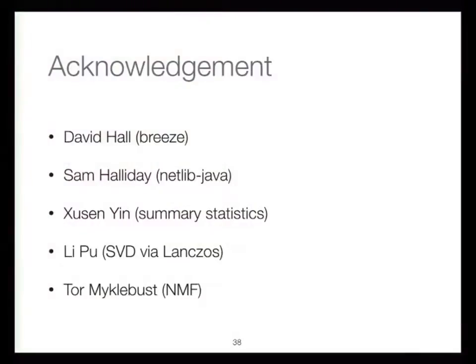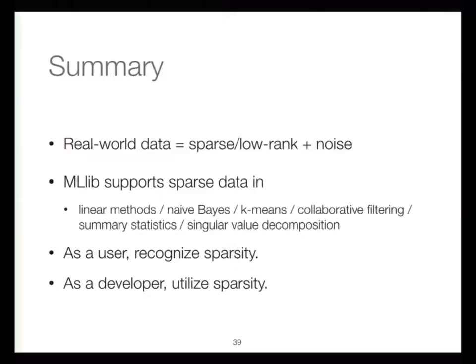For the implementation of sparse data support, I want to thank David Hall, the author of Breeze, Sam who cleared the license issue with NetLib Java, and the rest of the contributors who implemented all these functions. To summarize: try to view your data as either sparse or low-rank plus noise. MLlib supports sparse data in almost all its implemented algorithms. If you want to contribute algorithms, think about complexity relative to nnz. And if you're a user, understand your data and recognize sparsity.